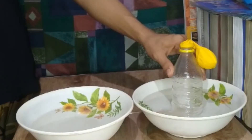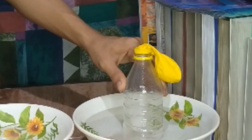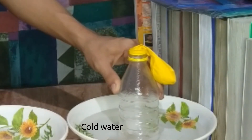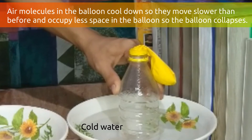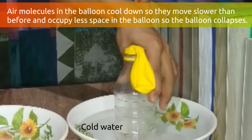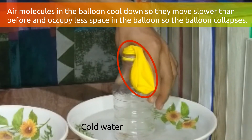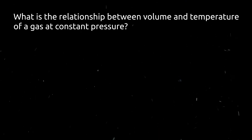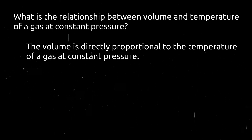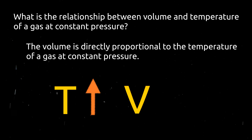Then transfer the bottle with the balloon into a bowl with cold water. Let it stay there for another 1 to 3 minutes, then observe what happens to the volume of the balloon. The volume of the balloon decreases. When the plastic bottle with balloon is transferred to a bowl of cold water, air molecules in the balloon cool down so they move slower than before and occupy less space in the balloon, so the balloon collapses. This relationship is called Charles' Law.